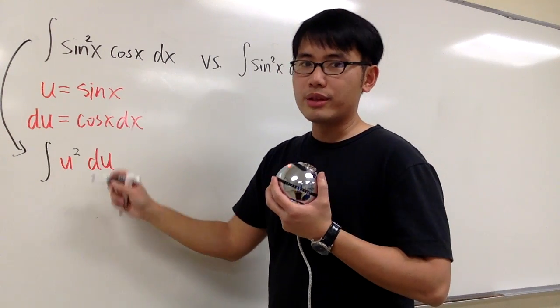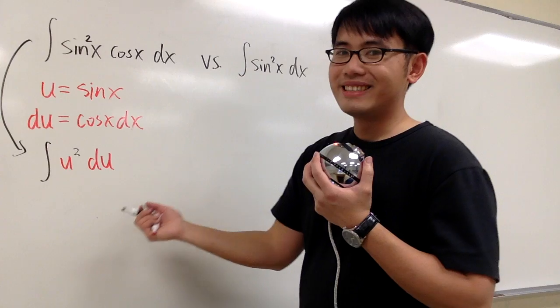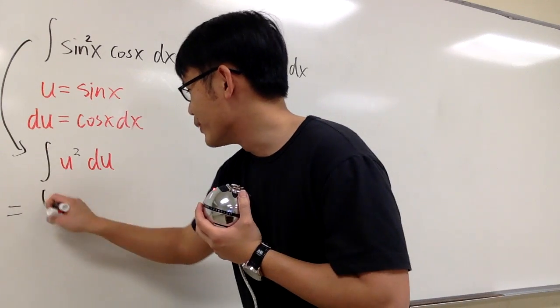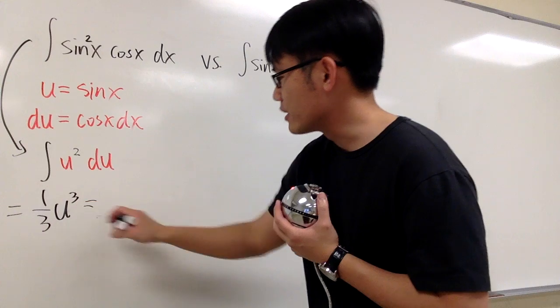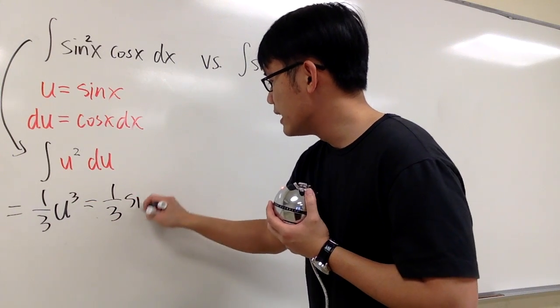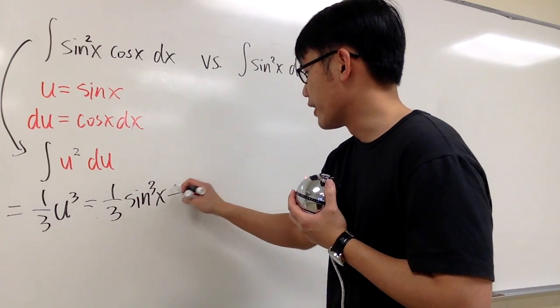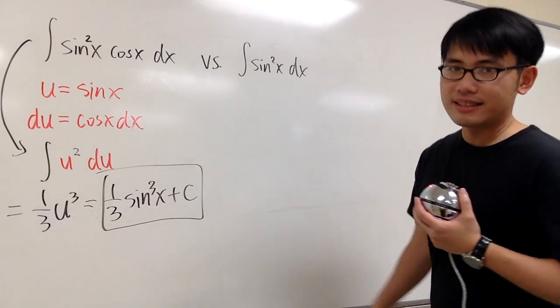And now we just have to integrate u to the second power in the u world. What's the answer for that? It's just 1 third u to the third power. And then we know u is equal to sine x. So this is the same as 1 third sine to the third power x. And then we are done. Plus C. End of story for that.